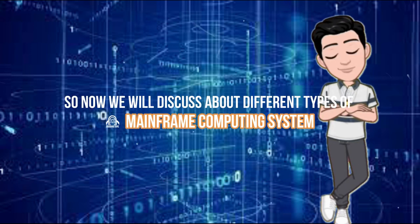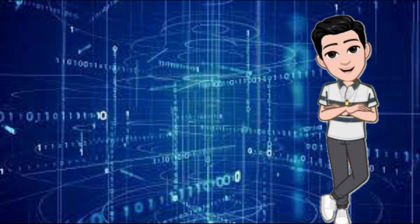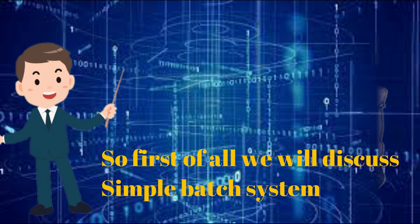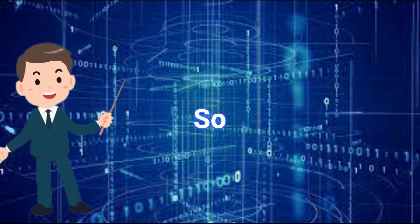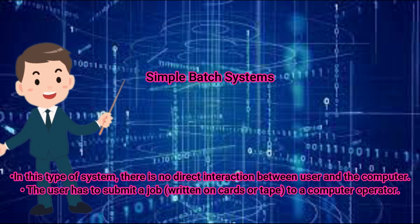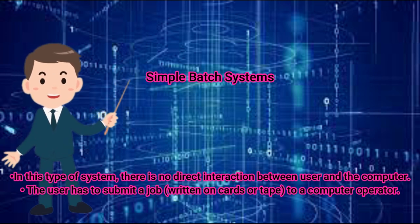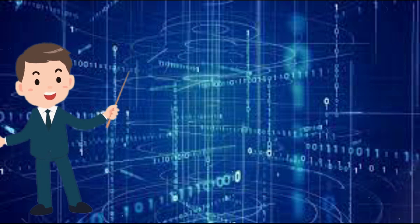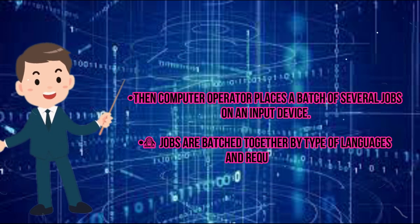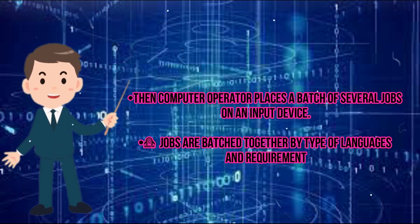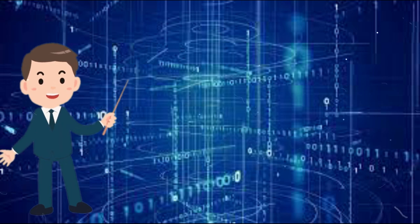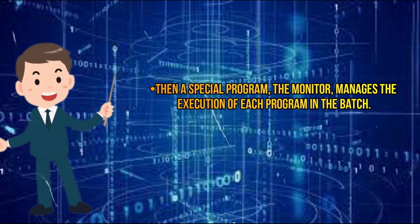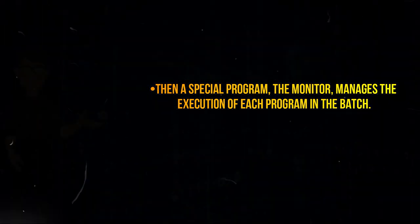Now we will discuss different types of mainframe computing systems. First, simple batch systems. In this type of system, there is no direct interaction between the user and the computer. The user has to submit a job, written on cards or tape, to a computer operator. Then the computer operator places a batch of several jobs on an input device. Jobs are batched together by type of language and requirement. Then a special program, the monitor, manages the execution of each program in the batch.